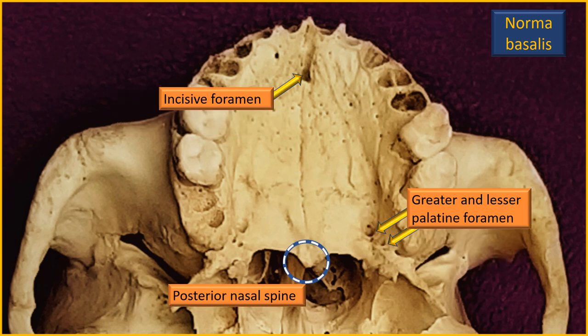When you trace the intermaxillary suture forwards, it ends in a fossa or foramen called the incisive foramen. This foramen actually leads into the nasal cavity — a probe entering here reaches the nasal cavity. Important vessels and nerves pass through this foramen into the nasal cavity.